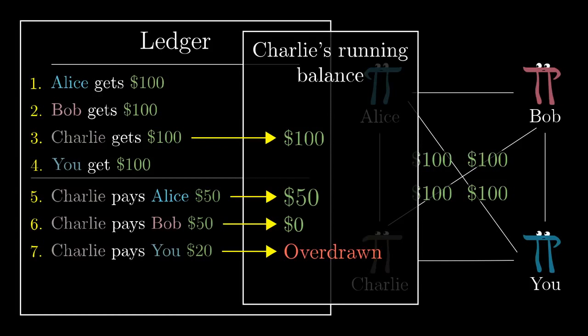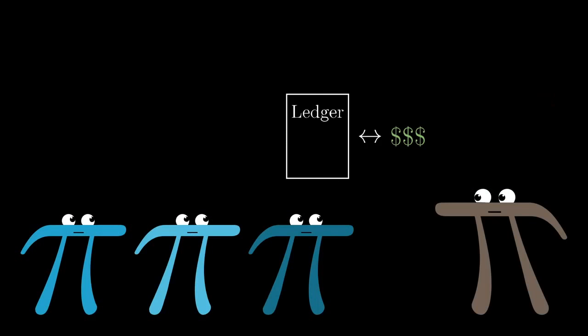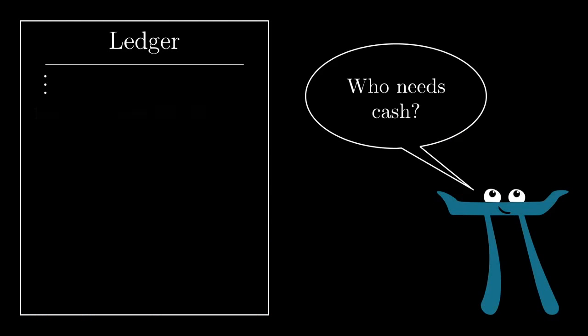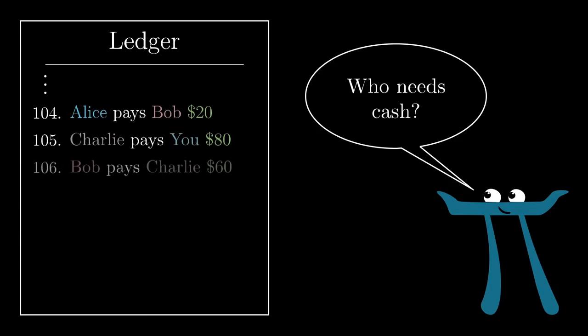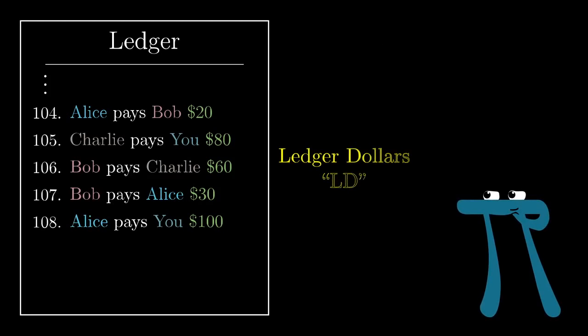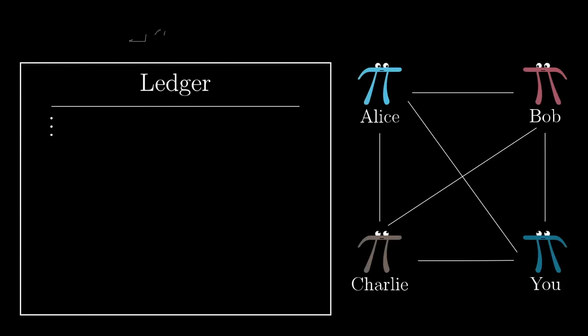What's interesting here is that this step removes the connection between the ledger and actual physical US dollars. In theory, if everyone in the world was using this ledger, you could live your whole life just sending and receiving money on this ledger without ever having to convert to real US dollars. In fact, to emphasize this point, let's start referring to the quantities on the ledger as Ledger Dollars, or LD for short. You are of course free to exchange ledger dollars for real US dollars.